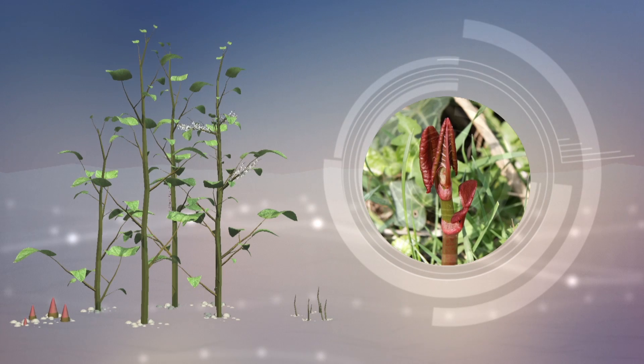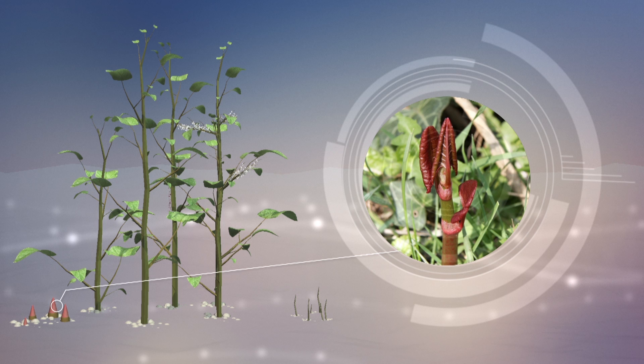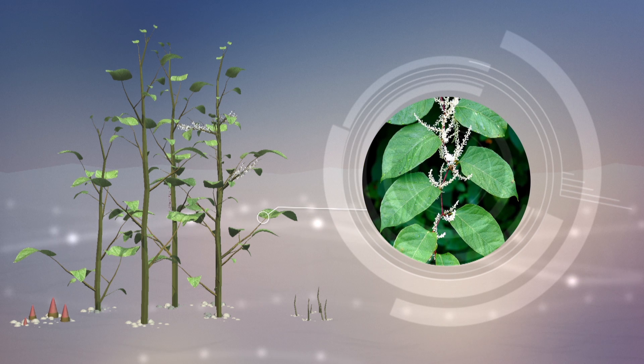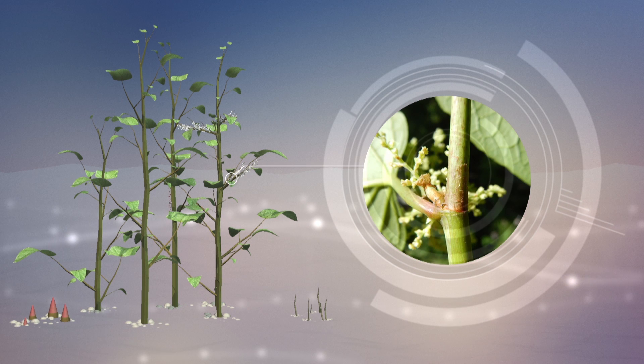Japanese knotweed has red-tinged shoots when it first breaks through the ground. The leaves are large heart or spade shaped and are arranged in a zig-zag pattern along the stem. The knots are nodes that are spaced at 1-2cm intervals where there are small white fibrous roots or buds emerging.